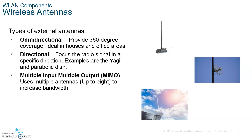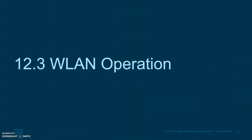There are three types of antennas — please write these down. The omnidirectional antenna covers 360 degrees equally in all directions. Then you have directional antennas, such as the Yagi and the parabolic dish. And then you have MIMO — Multiple Input Multiple Output — which uses multiple antennas to boost bandwidth. I'll stop here, and in the next video we'll start with Wireless LAN Operations. Submit everything I asked you to write as homework, and I'll see you in the next video.